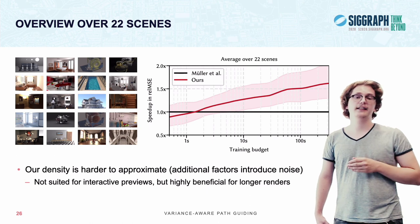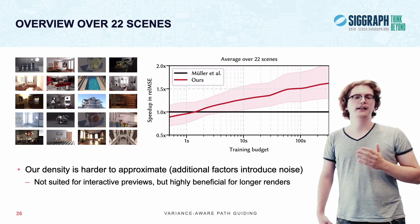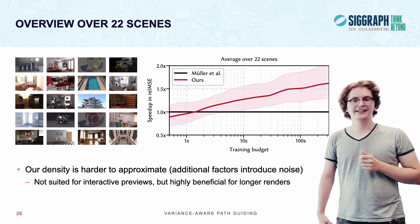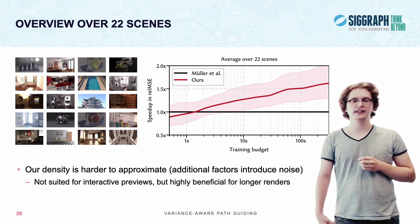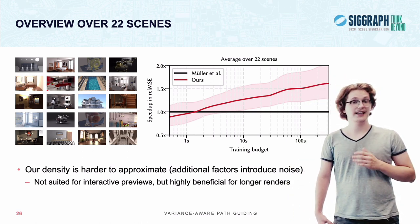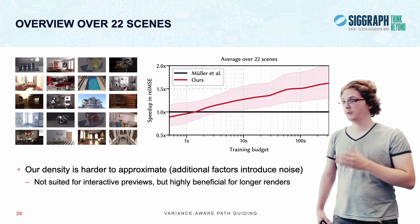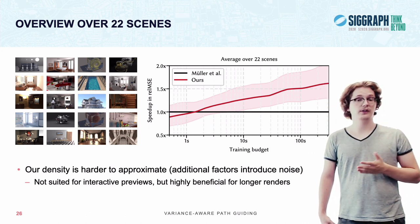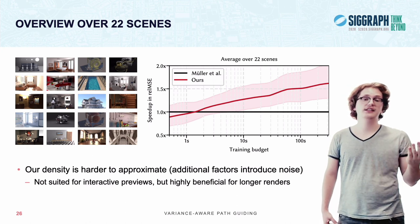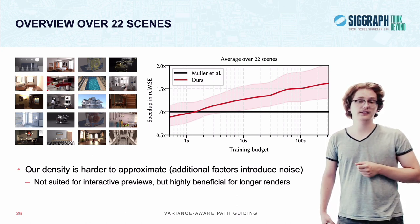And also because guiding caches at the beginning of training are not as robust. Now, that means our method isn't suited very well for interactive previews. However, it's highly beneficial for longer renders, as you can see on the right of this plot, where we achieve average speedups of around 60%, and for some scenes even being twice as fast or three times as fast.